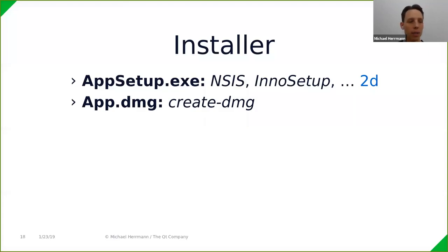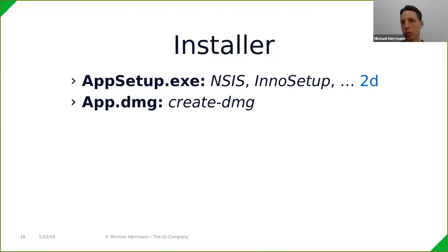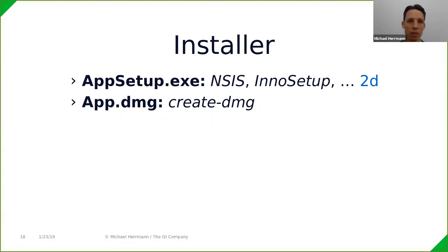On Mac, the typical distribution format is a .dmg file — a self-extracting archive. There are open source tools like create-dmg, a command line tool where you learn its options and how to place an icon inside the DMG. It's a bit easier than Windows, so maybe after a day you have a DMG file for your application.